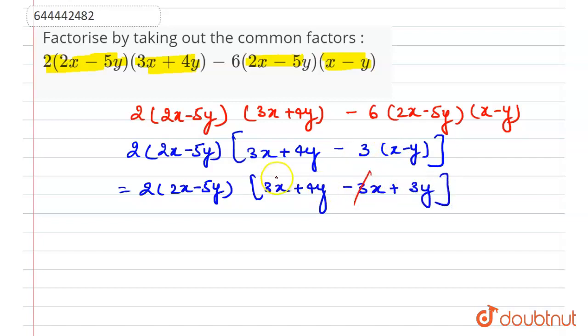This 3x will be cancelled out with this 3x, and we have now 2(2x - 5y)(4y + 3y), that is 7y.